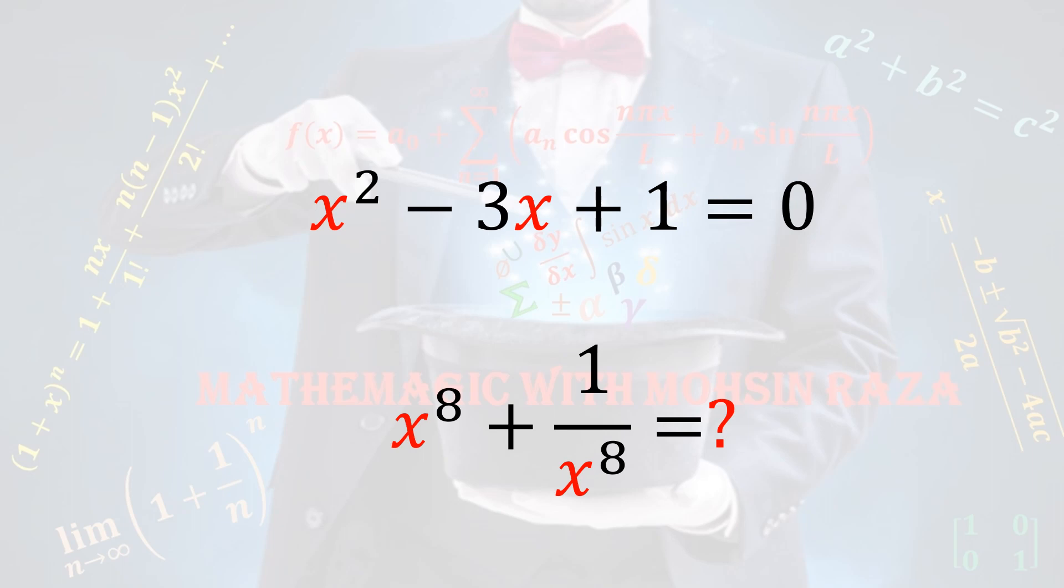Let's see how to tackle such questions. The equation given was x² - 3x + 1 = 0, and we have to find x⁸ + 1/x⁸, right? So how can we do this?